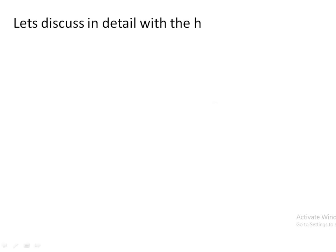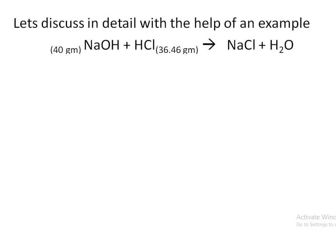Let's discuss this in detail with the help of an example. Look at this equation. In this equation, sodium hydroxide is reacting with HCl and forming NaCl and water. NaOH has molecular weight of 40 grams and HCl has molecular weight of 36.46 grams.